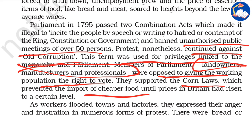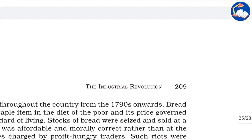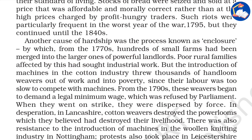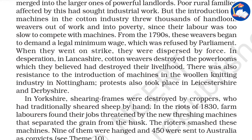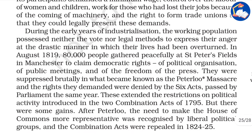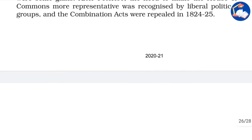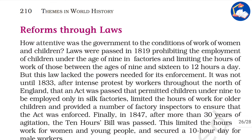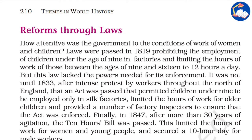They supported the Corn Laws, which prevented the import of cheaper food until prices in Britain had risen to a certain level. Another cause of hardship was the process known as enclosure — hundreds of small farms had been merged into larger ones, creating hardship for poor rural families who were forced to seek industrial work. As machines came into the picture, labourers found it hard to get work, and there were various protests as machines were taking over people's job opportunities.